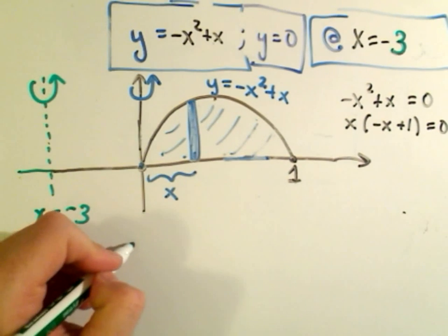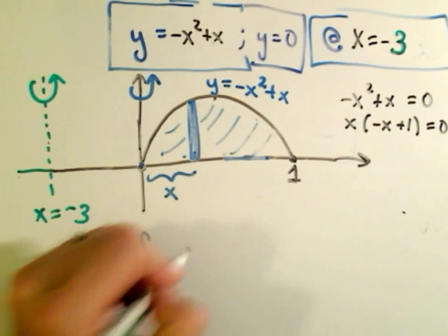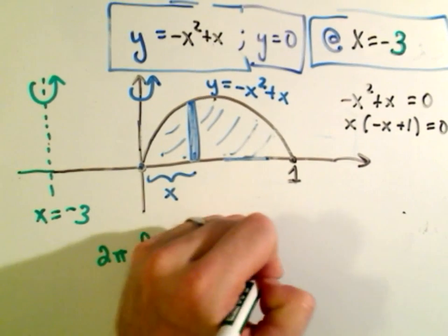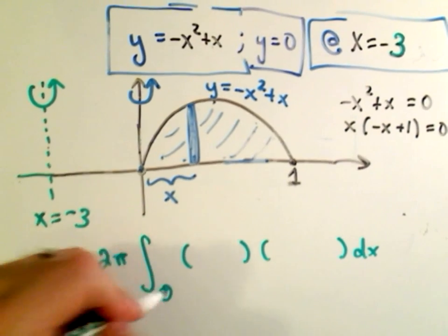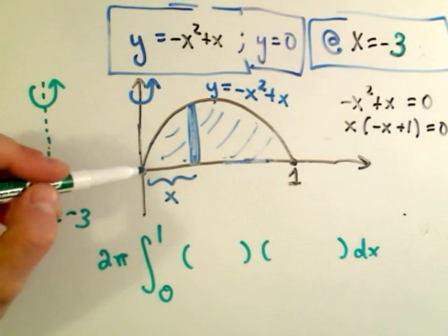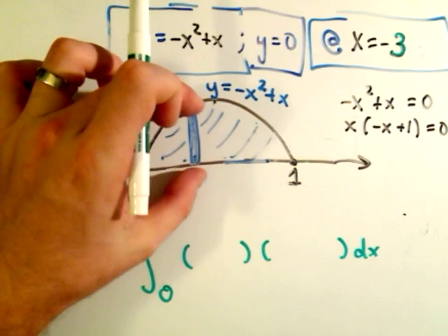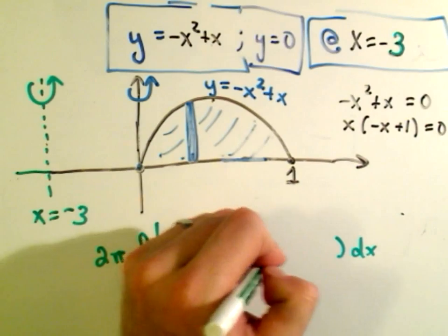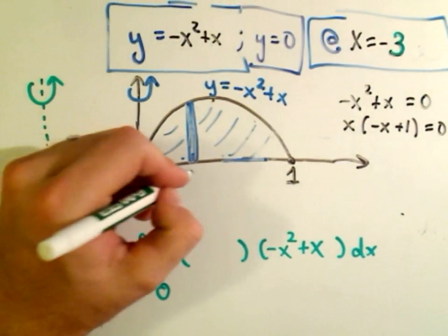Everything's still the same. We still use the formula 2 pi, the shell radius, and the shell height, dx. Our limits of integration are still going to be from 0 to 1, because that's where the region starts and that's where the region stops. The shell height is still the same. It's the top function minus the bottom function. But the only thing that's changed now is the shell radius.